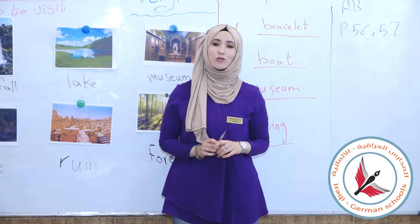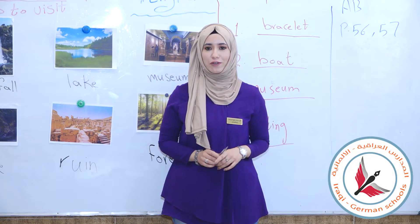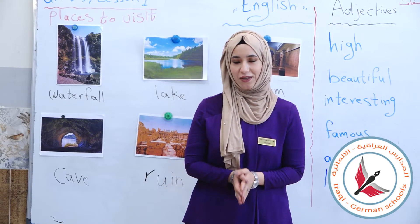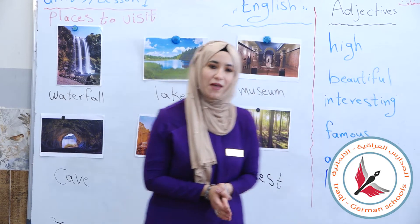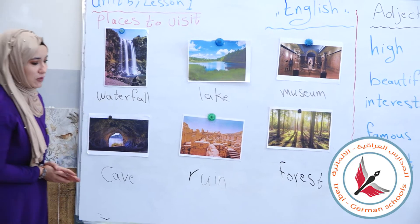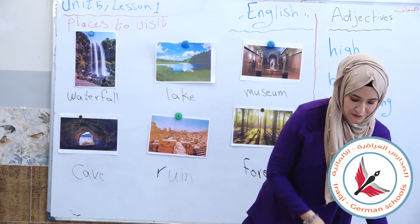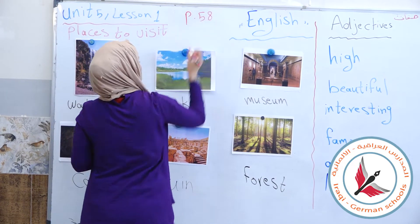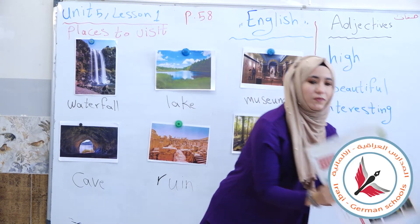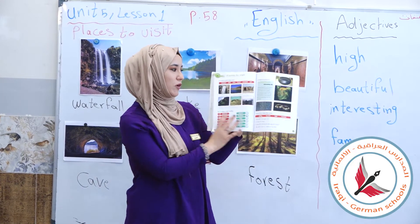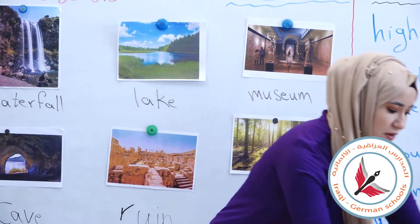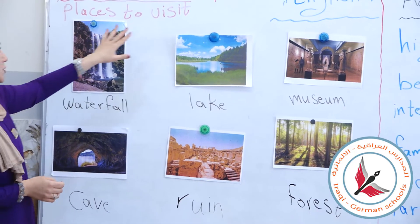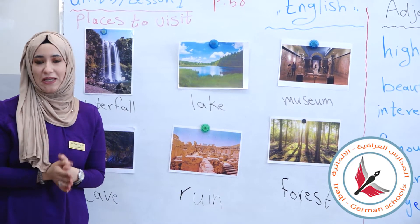Hello my dear pupils. Today we have a new lesson for 4th primary school, unit 5, lesson 1. Today's lesson is for 4th primary school, unit 5, lesson 1. Look at the board please. Open your book on page 58. Now here we have 'places to visit.' Today we will learn about places we can visit.